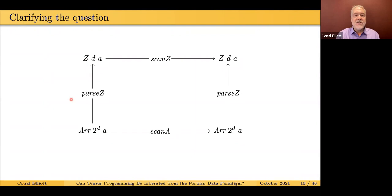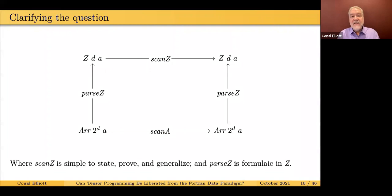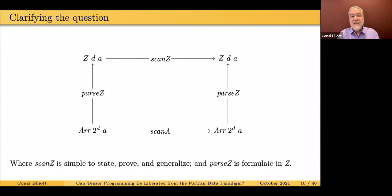Given the data structure as the grammar of the language, we can parse and unparse. The idea is to explain this algorithm as three phases: parsing, a much more natural algorithm, and unparsing. What it means for this algorithm to be correct is that it correctly implements scan Z. If we take the input array, parse it into the natural data structure Z, and perform the natural operation on it, we get the same result as if we had done the array scan on the array. The properties we want on scan Z are that it's very simple to state, prove, and generalize, and the parser needs to be formulaic — it's like you could generate it by a parser generator.